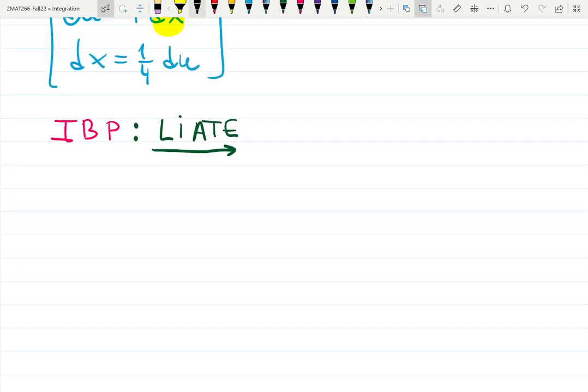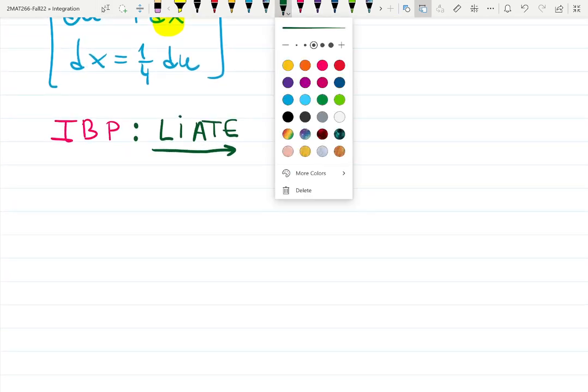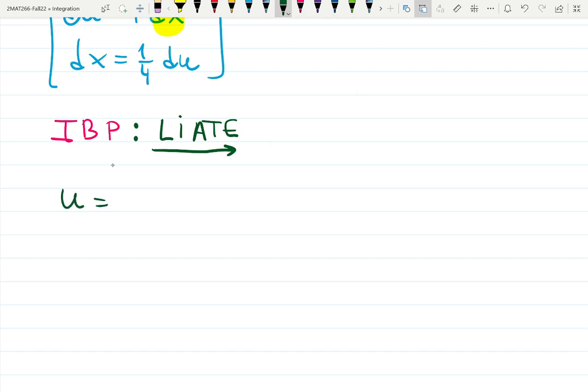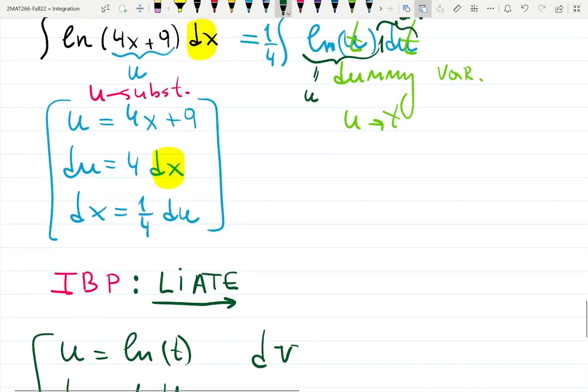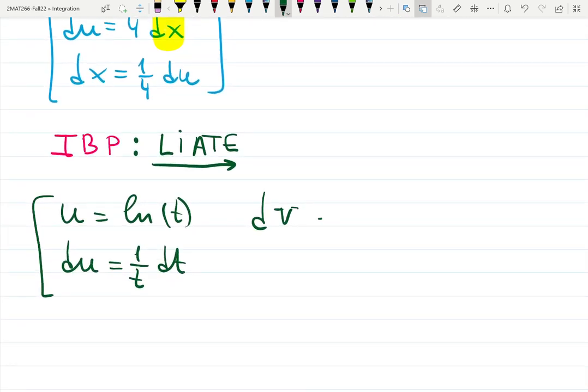Let's write it down. Let u be ln t. Then du is one over t dt. That's one side, one part of the integration by parts. dv ends up to be whatever is there, which is one dt. One dt. Well, integral of one is just t plus c, but we write c until the end.